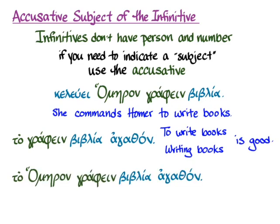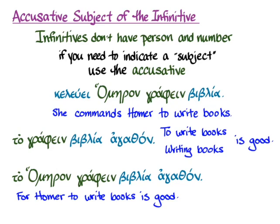But I can get more specific and say 'to Homeron graphene biblia agathon,' meaning 'for Homer to write books is good.' I've added Homer in the accusative, and that has made him the subject of the infinitive graphene. We don't have as neat a way to express that in English as Greek does, so I used the expression 'for Homer to write books is good' — that's one way to convey which person is doing that infinitive.